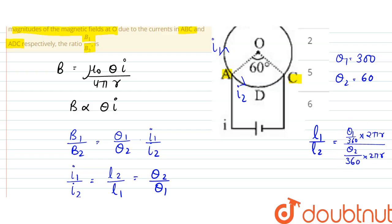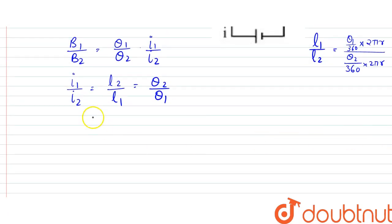So it is directly proportional to theta 1 and theta 2. So we can write that therefore we can replace B1 by B2 to be equal to, instead of theta 1 by theta 2, instead of i1 and i2 we can write theta 2 by theta 1.